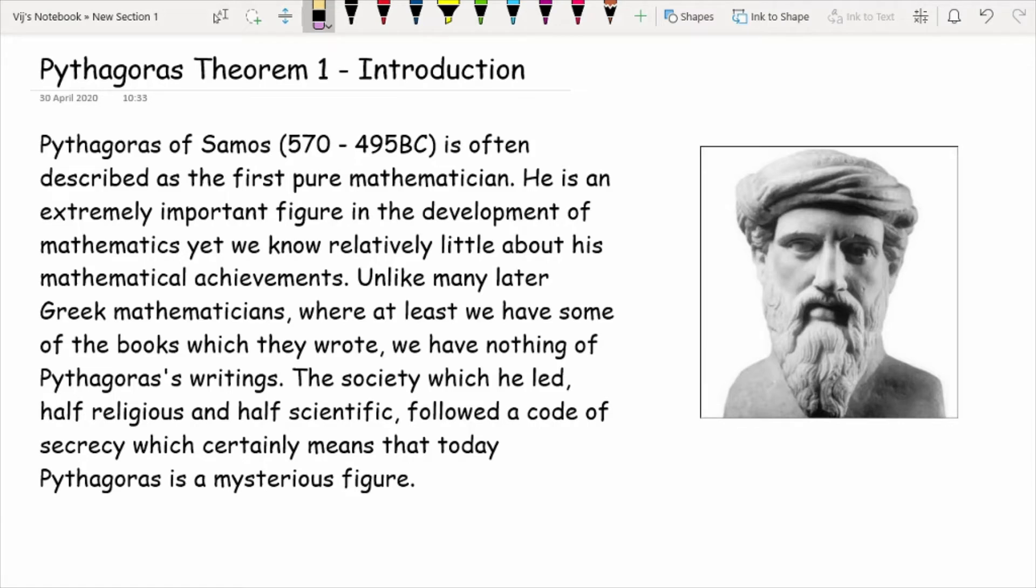So before we move on to what Pythagoras' most famous theorem is, let's have a look at the man himself. So Pythagoras of Samos, which backdates from 570 to 495 BC, is often described as the first pure mathematician.